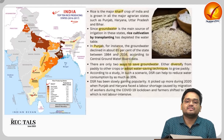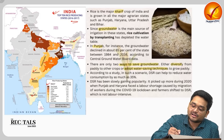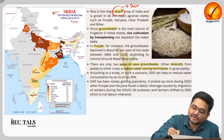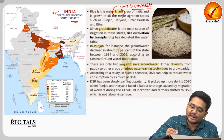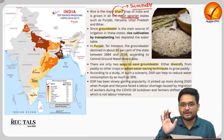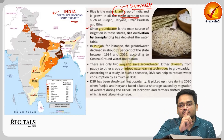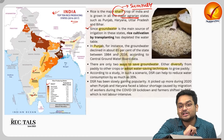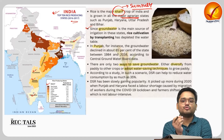Rice is a major kharif crop, cultivated during the summer season and harvested just before winter, present among all major agrarian states. Rice cultivation is a kind of cultivation which consumes a large amount of groundwater, and states like Punjab and Haryana are particularly facing a groundwater crisis.